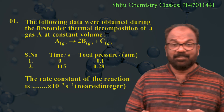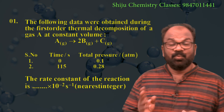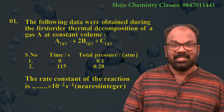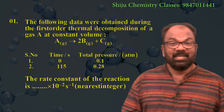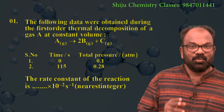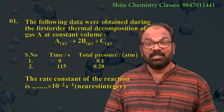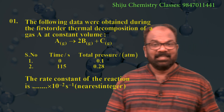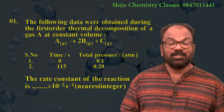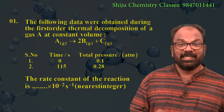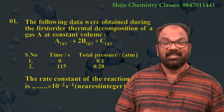The total pressure of A at different times are given. When time is equal to 0 seconds, the total pressure is 0.1 atm. When time is equal to 115 seconds, the total pressure is 0.28 atm. The rate constant of the reaction is dash × 10⁻² s⁻¹ (nearest integer).